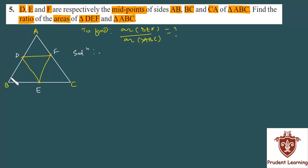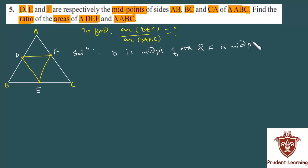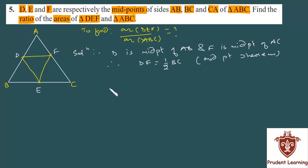D is midpoint of AB and F is midpoint of AC, therefore DF is half of BC. By the midpoint theorem, EF is half of AB and DE is half of AC.